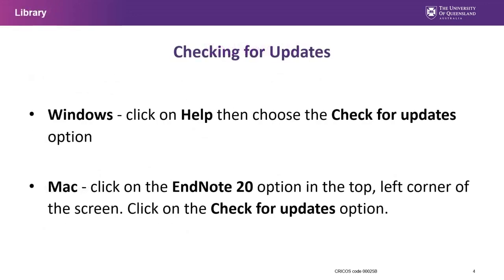You can check for updates in EndNote 20 on Windows by clicking on the Help menu in EndNote and choosing the Check for Updates option. On a Mac, you need to go into the EndNote 20 menu at the top left hand corner and go to Check for Updates there.